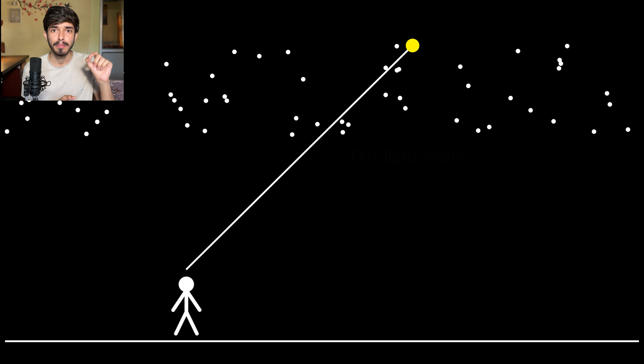Imagine this, you are on Earth looking up at the night sky. And using nothing but basic maths, you can tell the distance of stars light years away from us. Sounds like magic right? But it's not magic, it's Trigonometry.